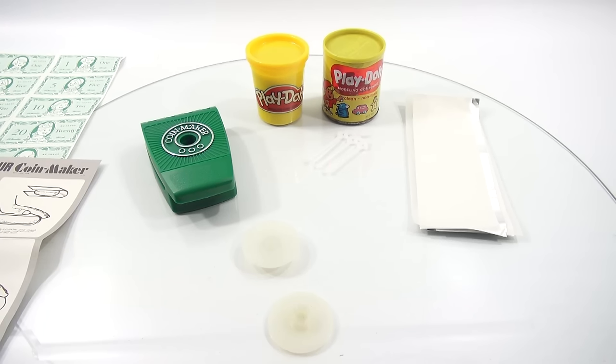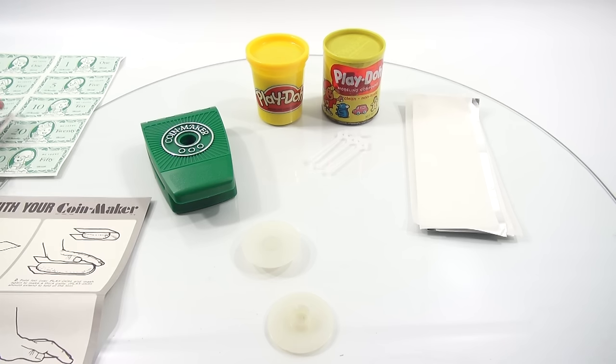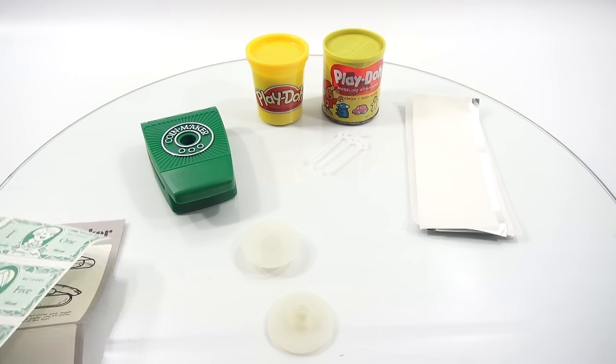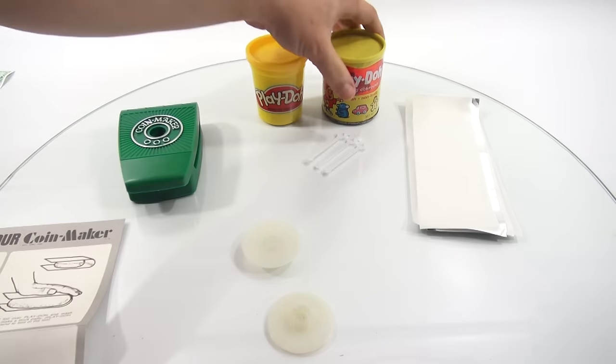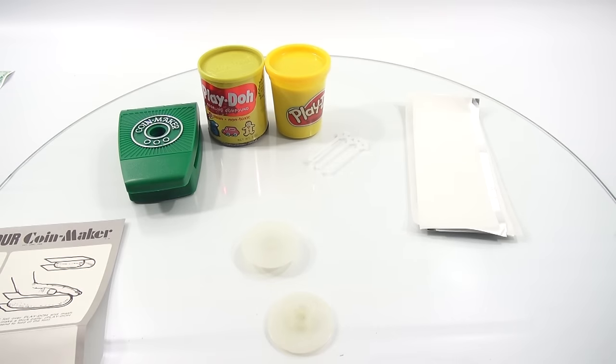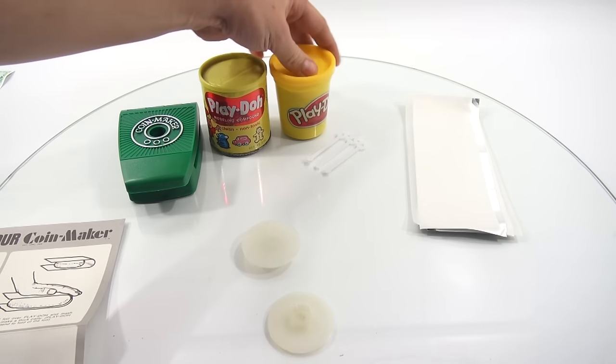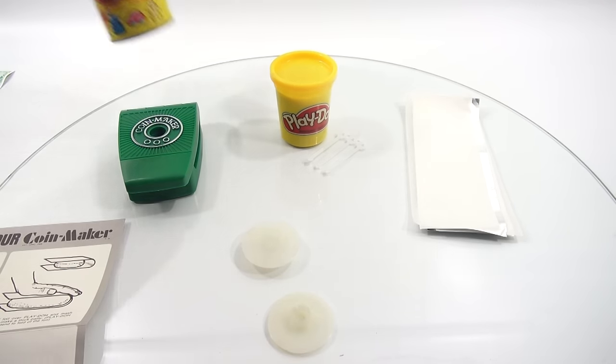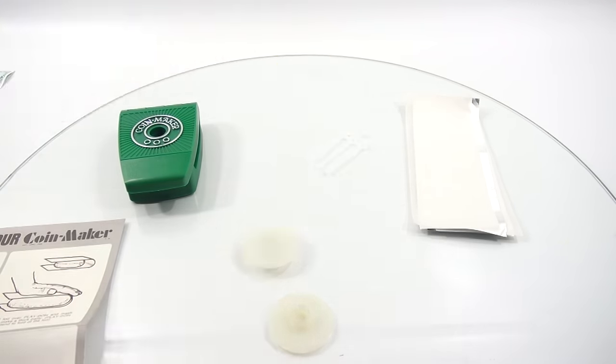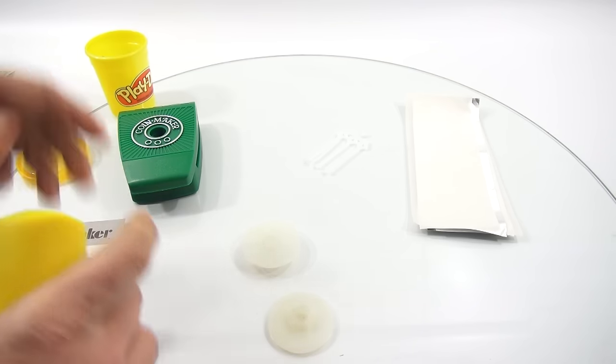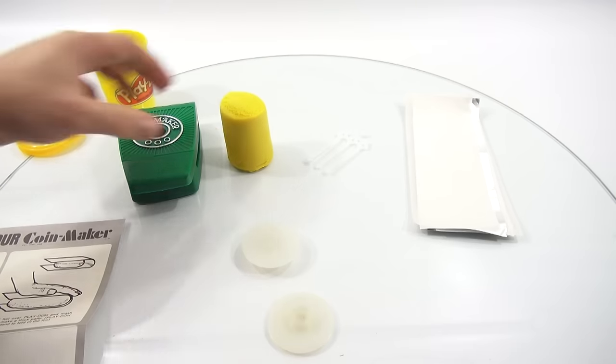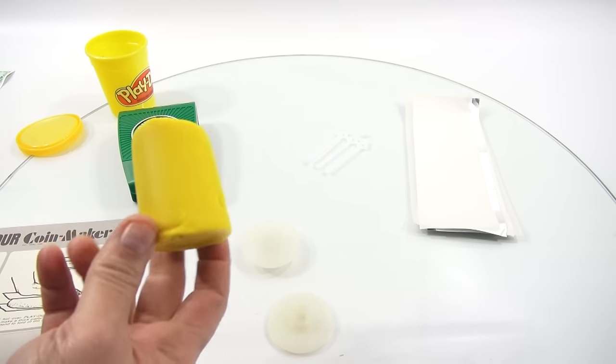Alright, so my table top is set now. I've got my instructions out. I don't need my money. I'll just move that off to the side. And then I'm just showing you the two cans. So this is the original can and this is a new can of Play-Doh. So let's move this one out of the way. And I am doing yellow. Like they said. Okay.